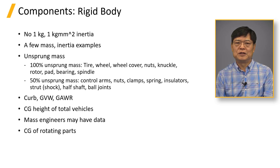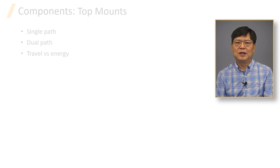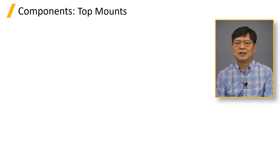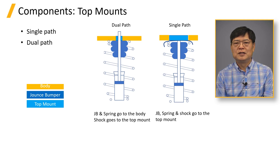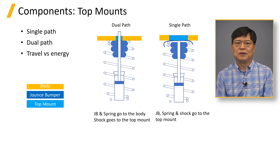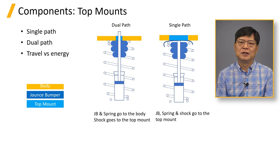Engineers should be careful about the CG location of rotating parts. The top mount has several layouts to accommodate the shock, jounce bumper, and spring forces. The single-pass top mount is subjected to all three forces — shock, jounce bumper, and spring — and transmits the total force to the vehicle body. The dual-pass top mount is subjected to only shock forces; spring force and jounce bumper force go to the vehicle body directly. Since the single-pass top mounts carry the total force, the mount rate is typically higher and mount deflection is larger than for dual-pass top mounts. Engineers should carefully review the top mount configuration to properly represent it in the vehicle dynamics model, as this is one of the common mistakes even experienced engineers can make.